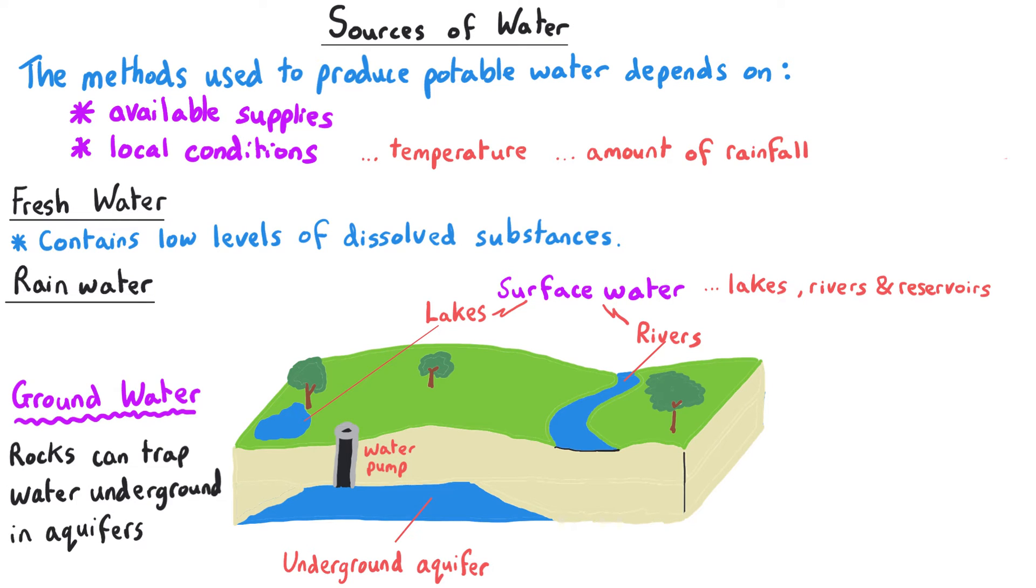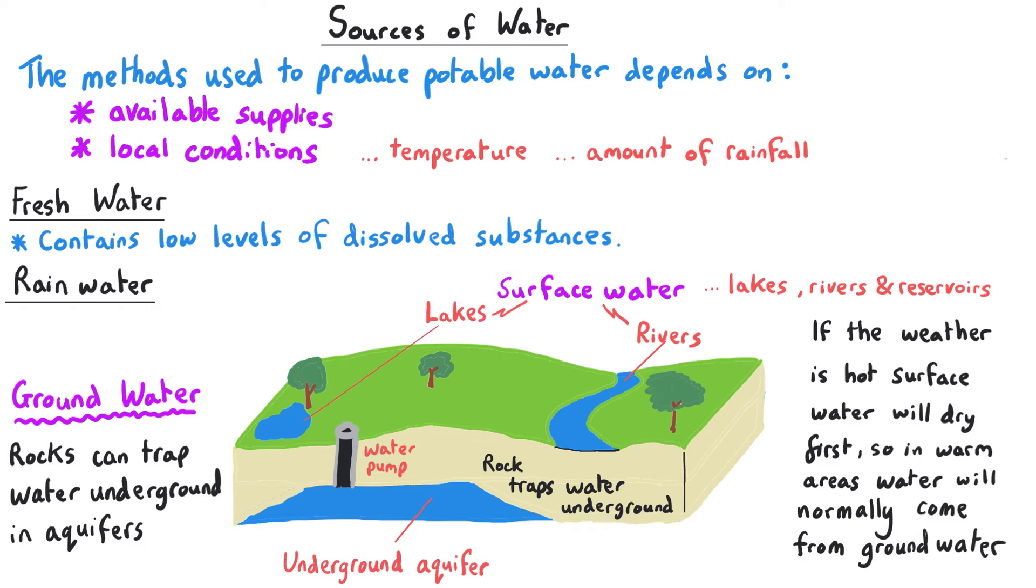We also have groundwater, which is water trapped underground by rocks—we often call these aquifers. This is a layer of rock that traps water underneath, and we can drill down to access this water supply. In hot climates, surface water usually dries up first, so in these warm areas fresh water normally comes from groundwater below the surface.